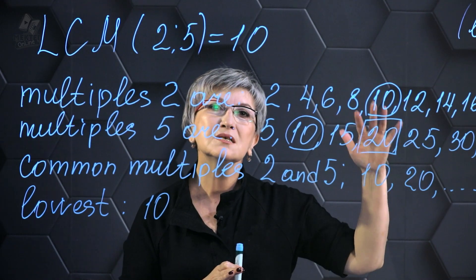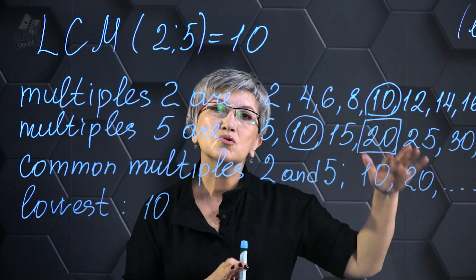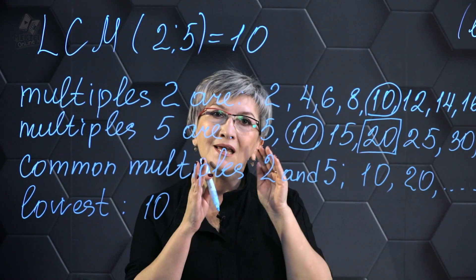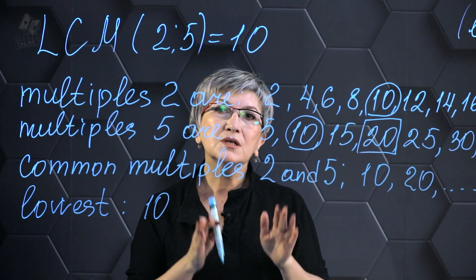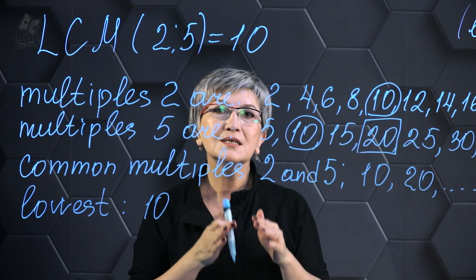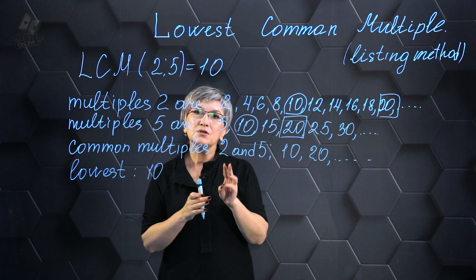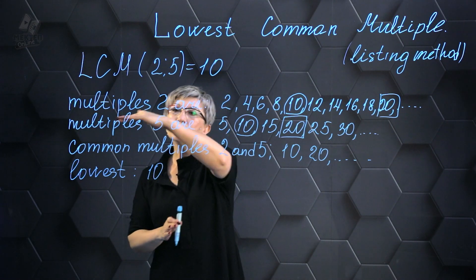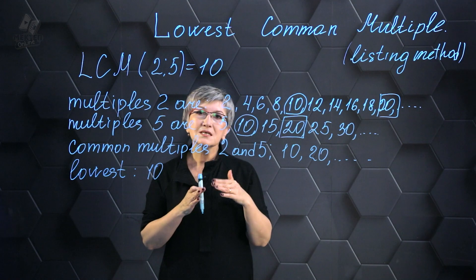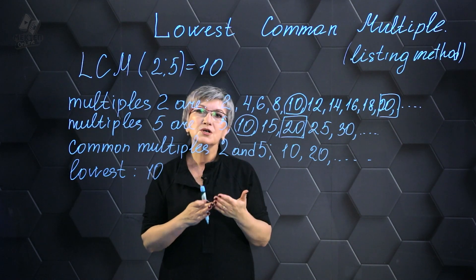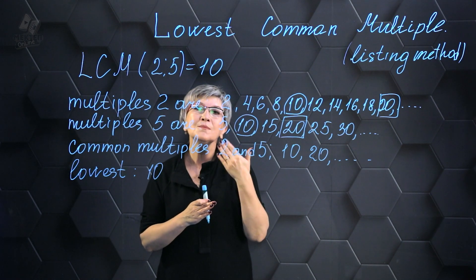If I jot down the common multiples, there'll be a bunch of them—10, 20, 30, 40, 50, and so on. However, the smallest number will be 10. Here is a simple method to locate the least common multiple for two given numbers. If you have three numbers or four numbers, you still go through these multiples and then find the common multiple and then the least common multiple.